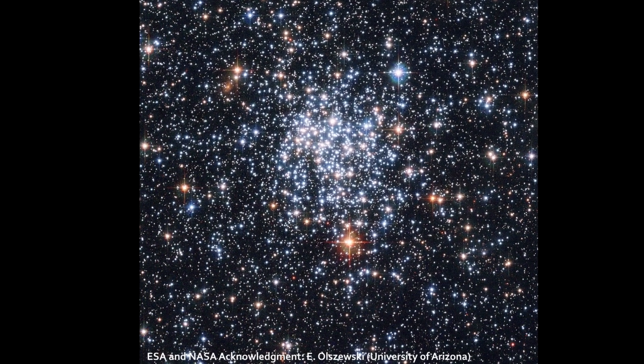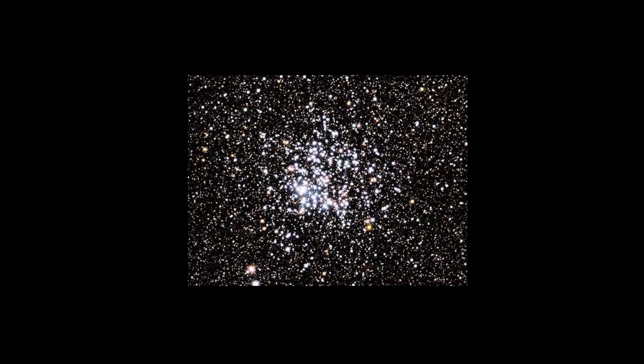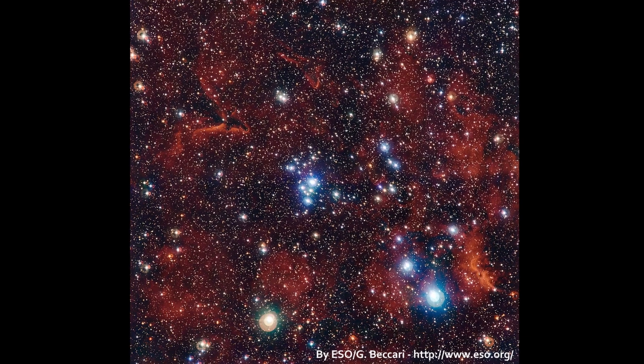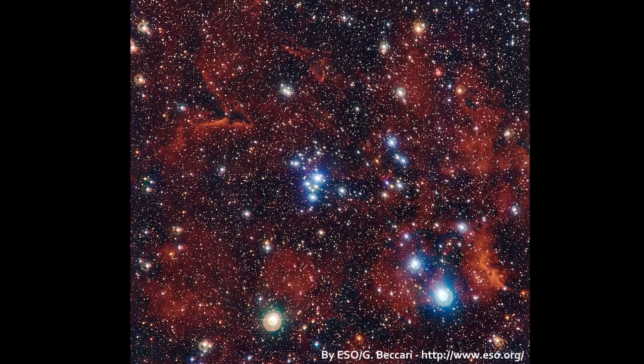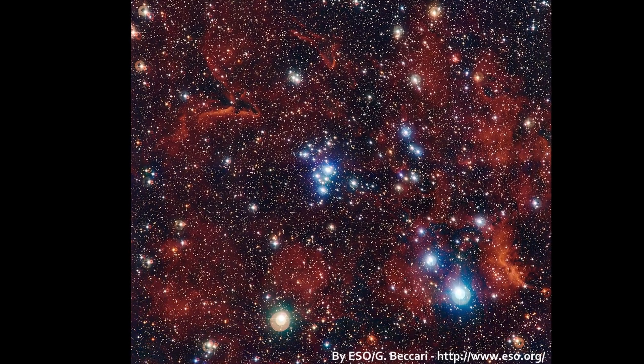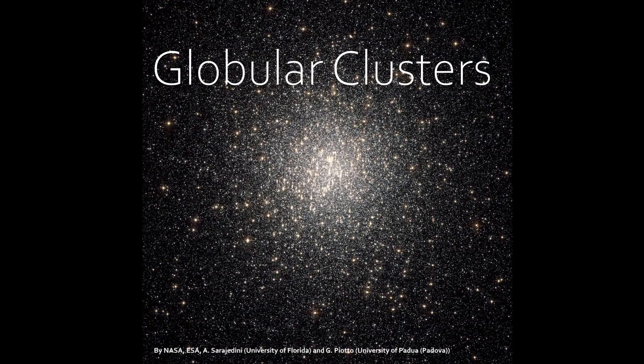As they travel through the Milky Way, the gravitational pull of other stars and objects will slowly rip these clusters apart, leaving solitary stars like our own sun behind.